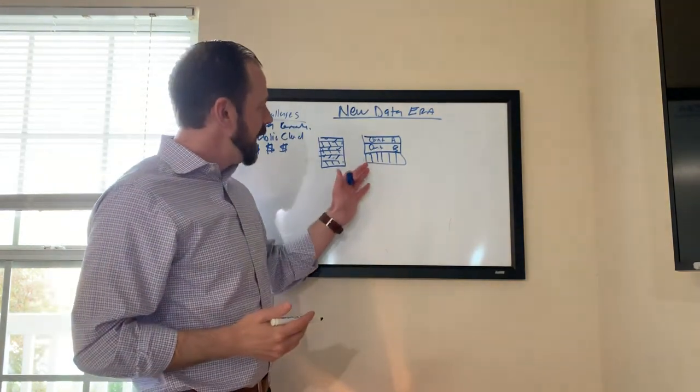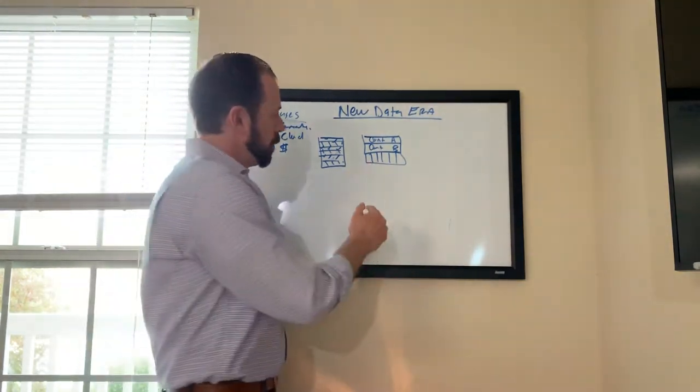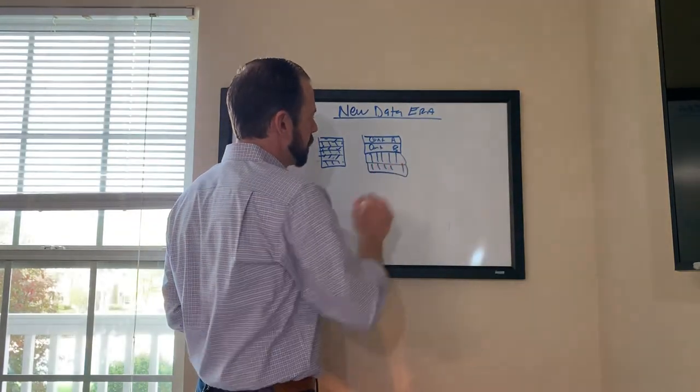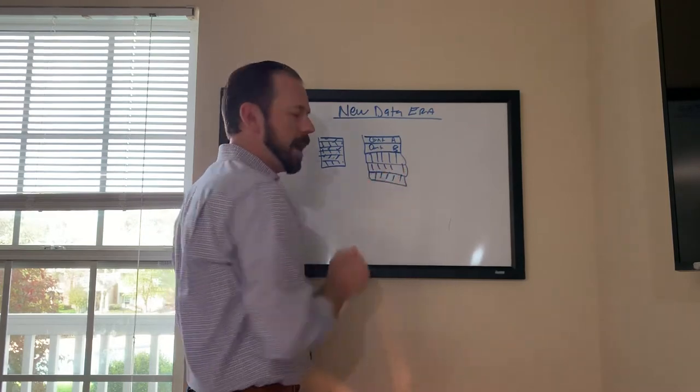And then you would have your spinning drives or media underneath it. And as the application and as the data grew, when you needed more capacity, you added another shelf of drives. When you needed more, you added more drives.